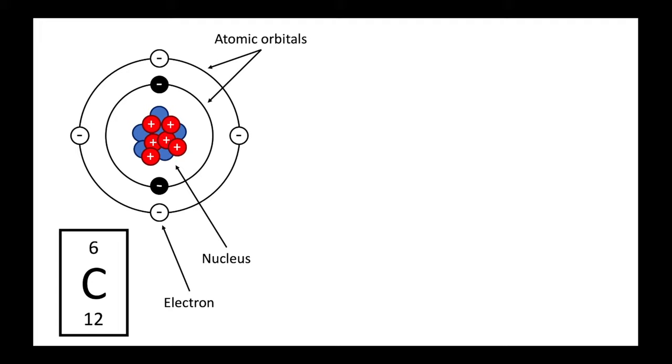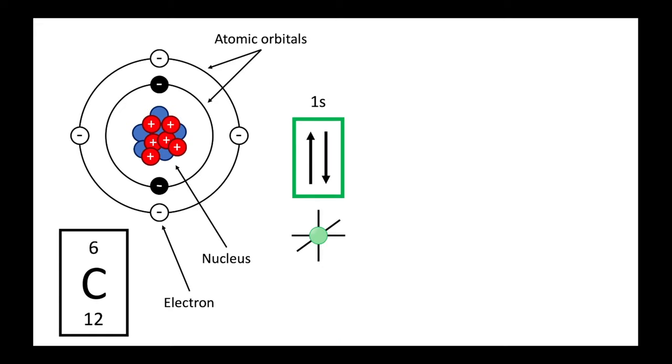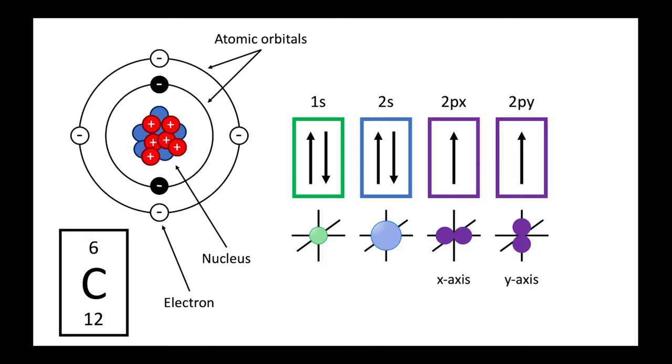The six electrons in carbon are distributed around the nucleus in atomic orbitals, which have specific shapes. The first two orbitals, which both contain a pair of electrons, are called 1s and 2s, and they have a spherical shape, with the 2s orbital being further away from the nucleus. In addition, carbon also has three p orbitals, called 2px, 2py and 2pz, which take on a barbell shaped structure along the x, y and z axes. The remaining two electrons are unpaired and occupy the 2px and 2py orbitals. This leaves the 2pz orbital unoccupied.